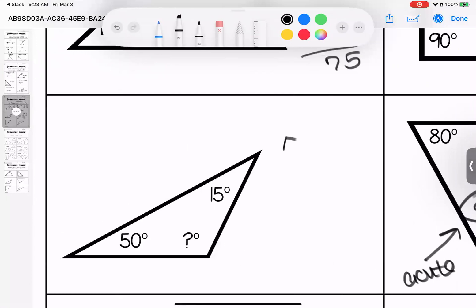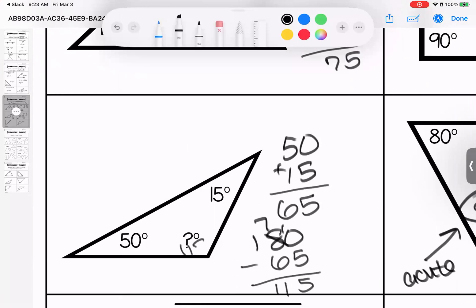My leftovers are 85 degrees. This angle is acute. I have 50 and 15 together. That gives me 65. I need 180 degrees in total. That means my leftovers are 115. This angle is obtuse.